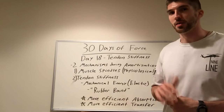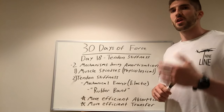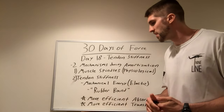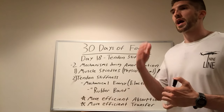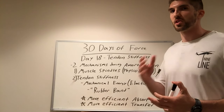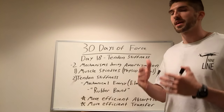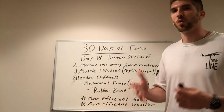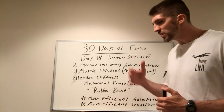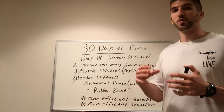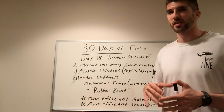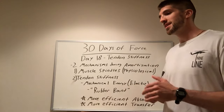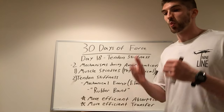This transitions into our next point: being more efficient in absorption. Back during our force absorption phase — the first 10 days — we talked about the importance of rate of force development, how quickly you can absorb force. Ground contact times are very quick in athletics: around 0.2 seconds for two-footed movements and closer to 0.1 seconds for one-footed movements. We want to absorb force as quickly as we can so we can spend as much of that short time on the ground producing force.